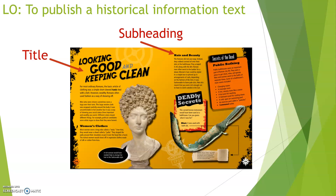The next feature is subheadings. So this section's subheading is 'Hair and Beauty,' and the text underneath is all about hair and beauty. Remember, the title tells you what the main section is about, and the subheading tells you the specific piece of information you might be looking for. So if I want to read about hair and beauty, I don't have to read the entire thing — I can go straight to that subheading. Think about whether your work could be broken up into different subheadings.